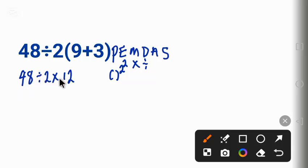So we are going to solve division before multiplication. 48 divided by 2 gives us 24 times 12. Okay, so let's work it out here: 24 and this is 12.